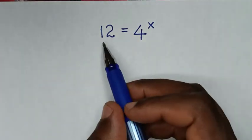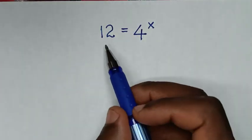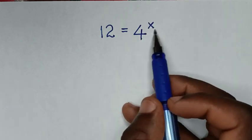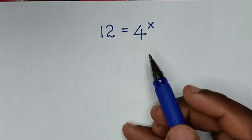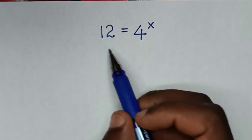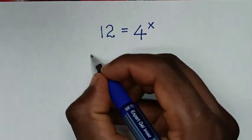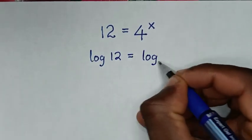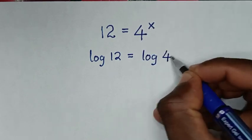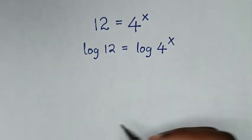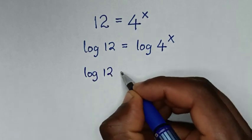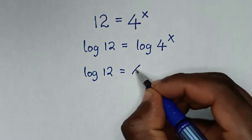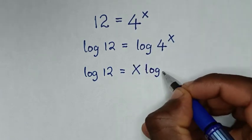Hello, welcome. We will solve the math problem: 12 is equal to 4 to the power of x, to find the value of x. In the first step, we apply log to both sides. So it will be log of 12 is equal to log of 4 power of x. Then this power of x will move to the base, so it will be log of 12 is equal to x log of 4.